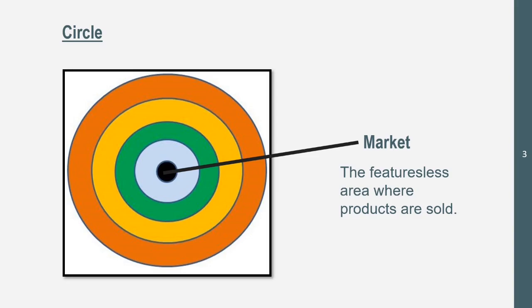This is the market, and this is the featureless area where the products are sold. This is where our consumers are going to be, and it's going to be the middle of our model.